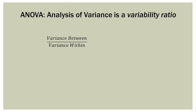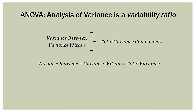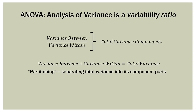Variance between divided by variance within — put together, those are the components of the total variance. For an ANOVA, the total variance is split into two parts: the variance between the means and the variance within each mean's distribution. We put those together and we have the total variance for the entire data set. This is called partitioning — separating total variance into its two component parts. This is what's called a one-way ANOVA. Total variance is made up of variance between the means and the variance within each sample.